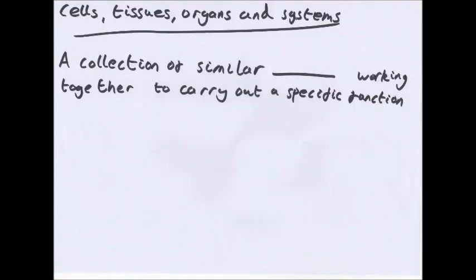So cells, tissues, and systems. This is organization, and there's a very generic definition. A collection of similar working together to carry out a specific function. So what's a tissue? A collection of similar cells working together to carry out a specific function. What's an organ? A collection of similar tissues working together to carry out a specific function. What's an organ system? A collection of similar organs working together to carry out a specific function. You don't always need to use similar unless you're talking about tissues. Similar is definite for tissues because you have similar cells in tissues, but in organ systems, a collection of organs will be fine.